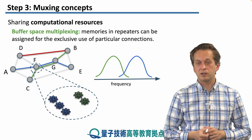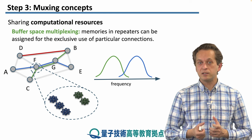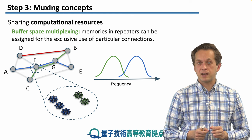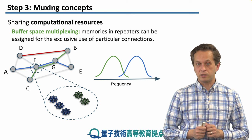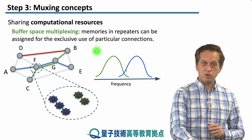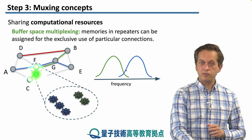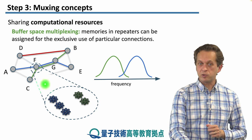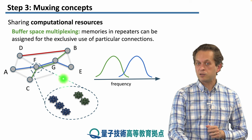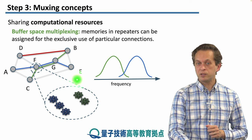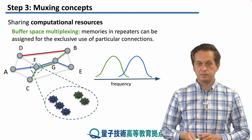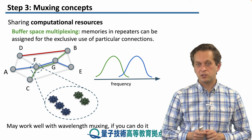How do we share computational resources? This is known as buffer space multiplexing, where memories in repeaters are assigned for the exclusive use of a particular connection. For example, node F in our quantum network could have a set of qubits where the blue qubits are dedicated to the blue connection A-to-E, and the remaining green qubits are assigned to the green connection C-to-B. This, however, is an extremely challenging task.